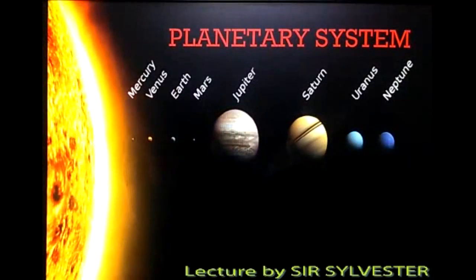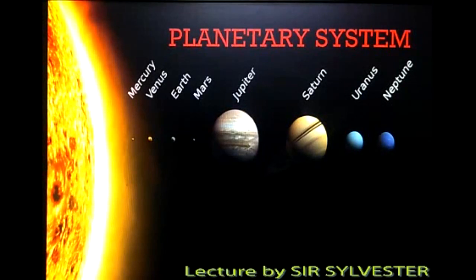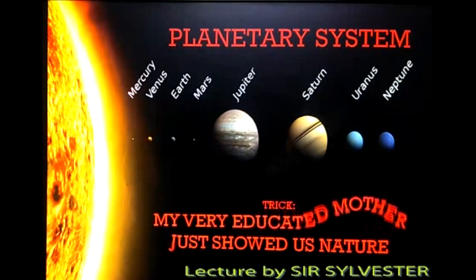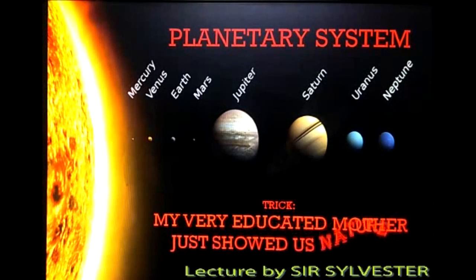If you look at our planetary system, you will find that we have 8 planets starting with Mercury, Venus, Earth, Mars, Jupiter, Saturn, Uranus, and Neptune. There is a small trick to remember this: My Very Educated Mother Just Showed Us Nature.